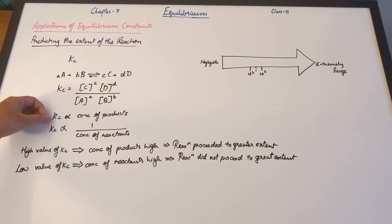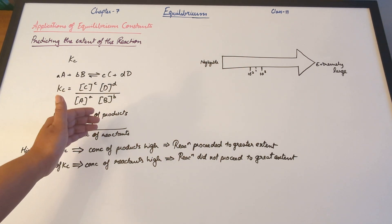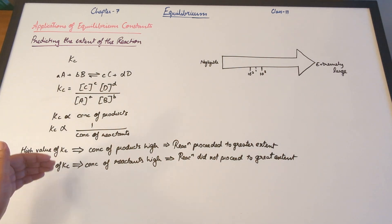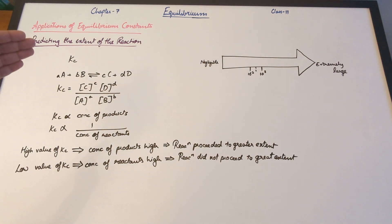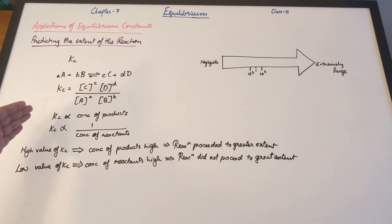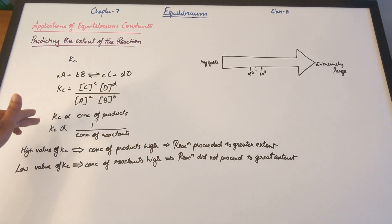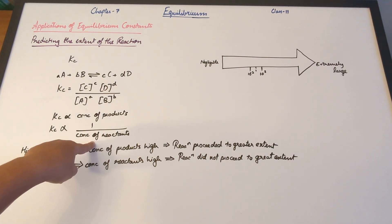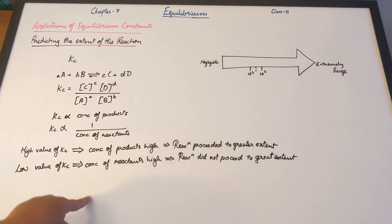So if Kc is high, Kc is directly proportional to the concentration of the products — higher the value of Kc, more product formed, meaning the reaction went forward to a greater extent. On the other hand, Kc is inversely proportional to the concentration of reactants, so a lower value of Kc means a higher concentration of reactants, meaning the reaction did not proceed to a great extent.